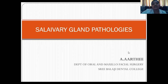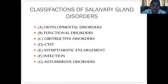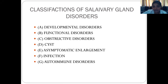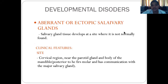Coming to salivary gland pathology, let's see how it's classified. They are classified as developmental disorders, functional disorders, obstructive disorders, cysts of salivary glands, asymptomatic enlargement of salivary glands, infection — which is either viral or bacterial — and finally, autoimmune disorders of salivary glands.